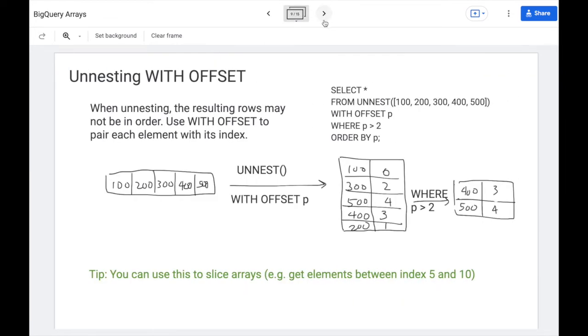Okay. Now, when you unnest, the resulting rows may not be in order, which is not what you would expect, but it helps BigQuery be more performant. So if you want an order, you need to specify with offset. In this example, we have this array here. If we unnest with offset p, notice how the elements might be out of order in the rows, but at least we have the index. So we know the original order that the array was in.